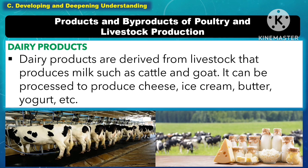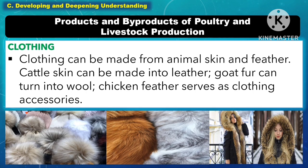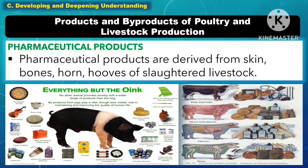Dairy products are derived from livestock that produce milk, such as cattle and goat. Milk can be processed to produce cheese, ice cream, butter, and yogurt. Eggs and meat are excellent sources of protein and other nutrients. Clothing can be made from animal skin and feather — cattle skin can be made into leather, goat fur can be turned into wool, and chicken feathers serve as clothing accessories. Pharmaceutical products are derived from the skin, bones, horn, and hooves of slaughtered livestock.